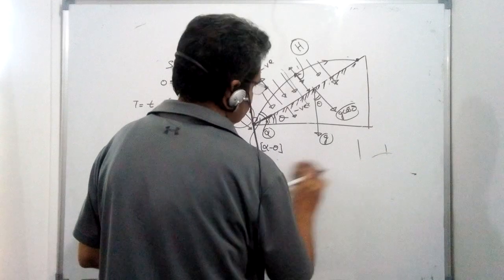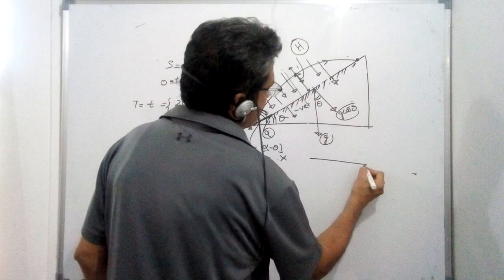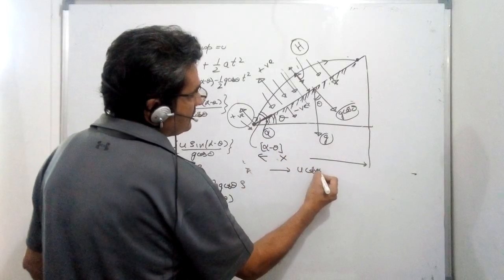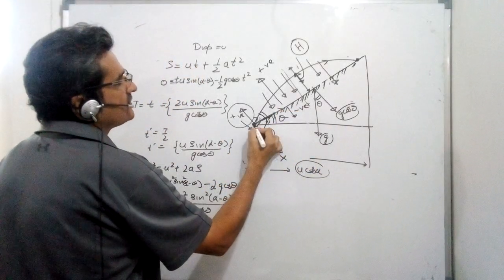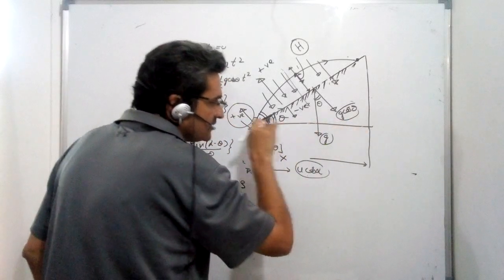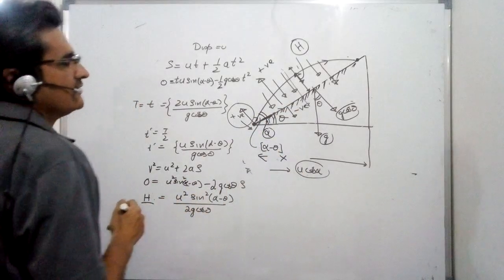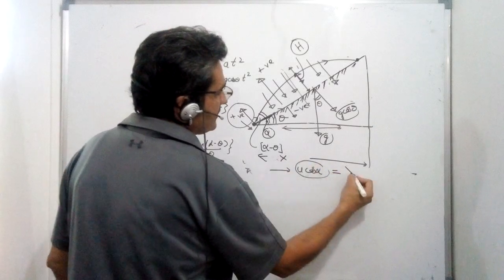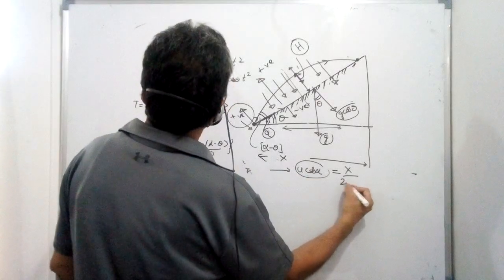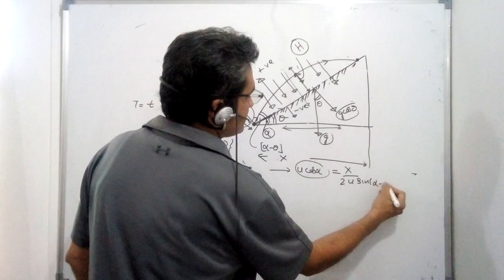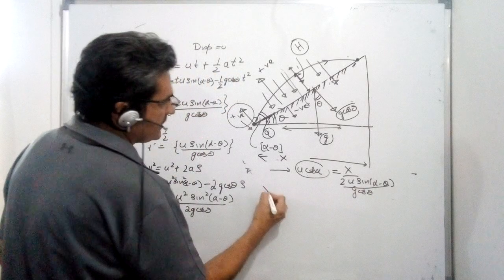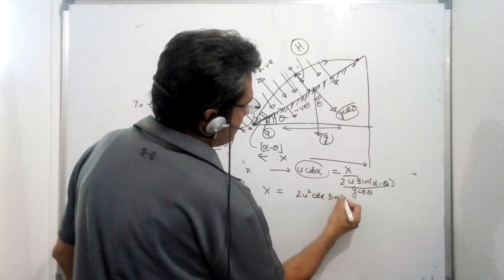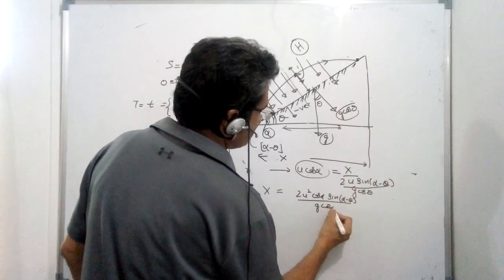Now we find the range. First, find the actual horizontal distance x traveled. The horizontal velocity along the ground is U cos alpha — note that U cos(alpha minus theta) is the velocity along the plane, but along the ground it is U cos alpha. There is no horizontal force, so horizontal motion is uniform. Thus x = U cos alpha × T = 2U² cos alpha sin(alpha minus theta) / (G cos theta).